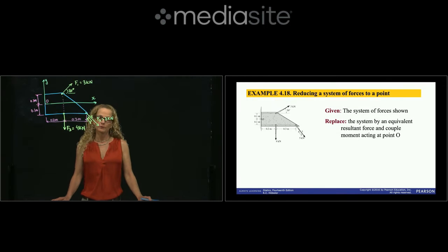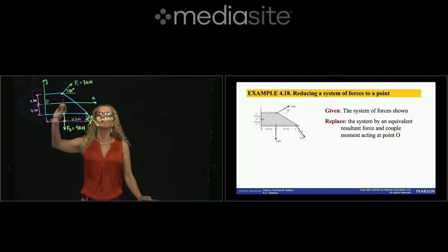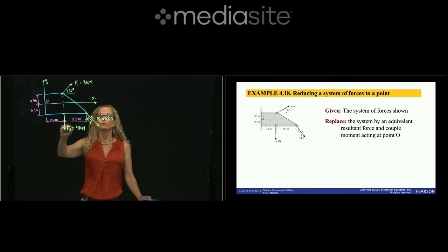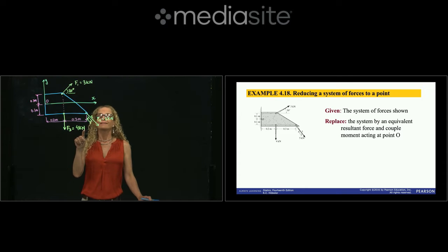We are in Chapter 4, and in this program we are asked to reduce the system of forces to point O — that means to find an equivalent system of forces at point O. From the theory, we know that reducing a system of forces means to find the resultant force and the moment about point O.